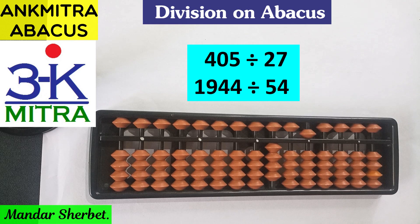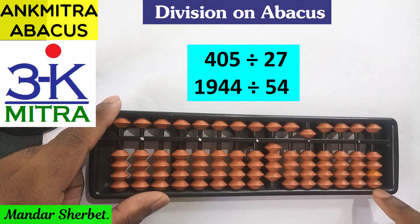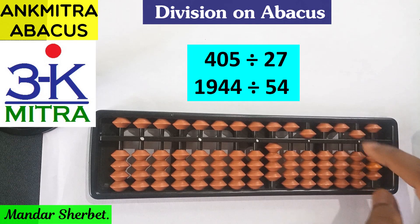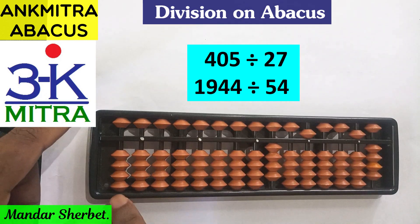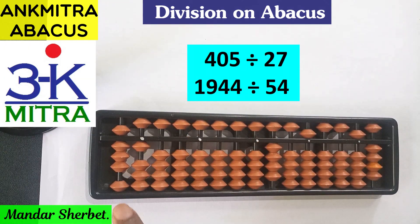We'll take three multiples of 27. 27 one time is 27 itself. 27 two times is 54 — I'll note that in the extreme right corner: 54. And 27 three times is 81 — I'll note that in the extreme left corner: 81. Just to keep them in front of my eyes. Now we'll start with the division.